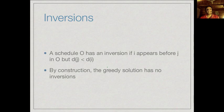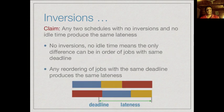Our strategy processes jobs in order of deadlines. We say that schedule O has an inversion if it has two jobs which appear out of order with respect to deadlines — job i appears before job j in O, but the deadline of j is strictly before the deadline of i. Our greedy solution processes things in deadline order, so there cannot be any inversions in our schedule A.